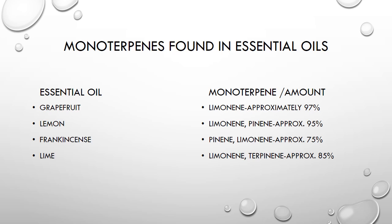On this slide are some of the more common essential oils and what monoterpenes are found in them. The four oils listed are grapefruit, lemon, lime, and frankincense, and the second column shows the monoterpenes and their amounts. For example, grapefruit contains limonene as its monoterpene at approximately 97%.